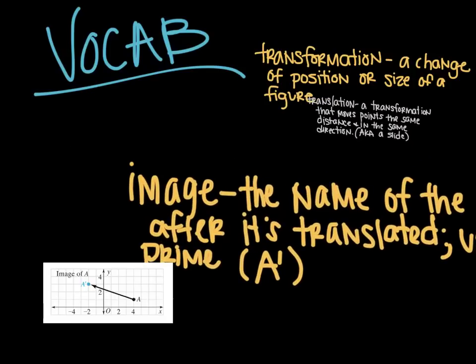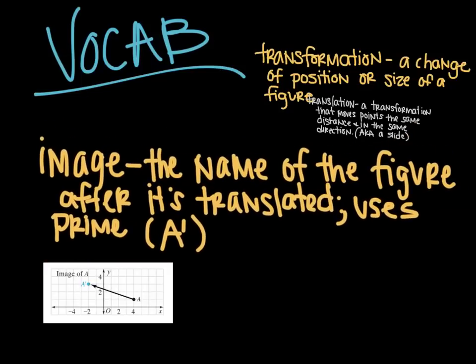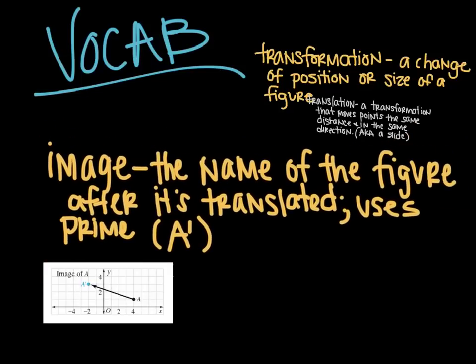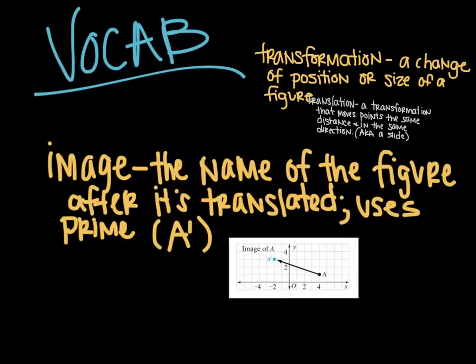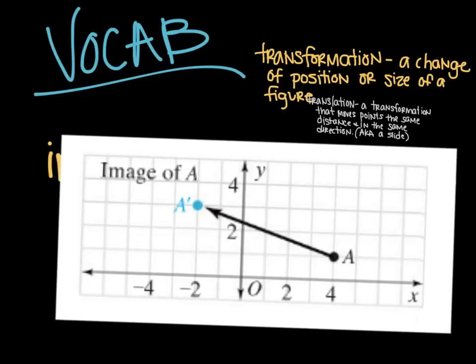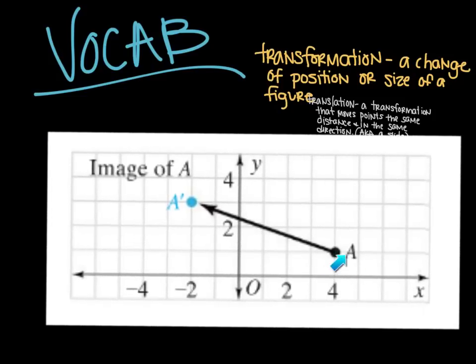Another vocabulary word that's important is an image. That's what you call the figure after it's been translated or moved. And it uses prime notation. I've given you a picture of what it looks like. It's kind of like a little apostrophe. And here in this picture, you can see, here is the original dot. And then the image of A is the blue dot. And then we use prime notation, which means we now call it A prime. And it's got the little apostrophe sign next to it. So that way we know this was the original and this is the new one.